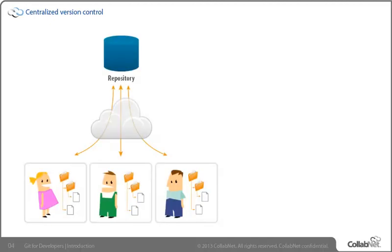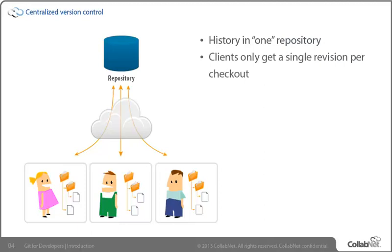As we look at the approaches to implementing version control, it makes sense to start with the one you're probably most familiar with — the centralized model, which most legacy tools have been utilizing. In the centralized model, all the history is expected to be put into one repository. What we get locally is one single revision checked out — at least for one experience we're trying to have with it. We could have multiple of those for different purposes, but each one is a single snapshot of files and folders.